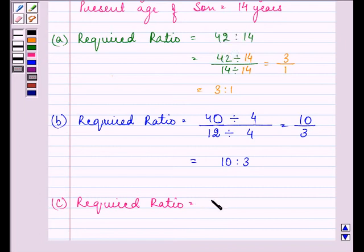So after 10 years he will be 52. So the son will also be 24, that is 14 plus 10, dividing them by their HCF.